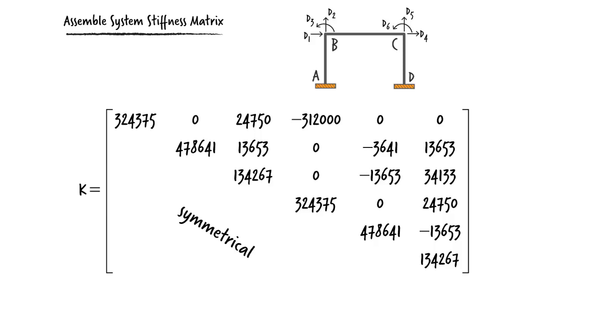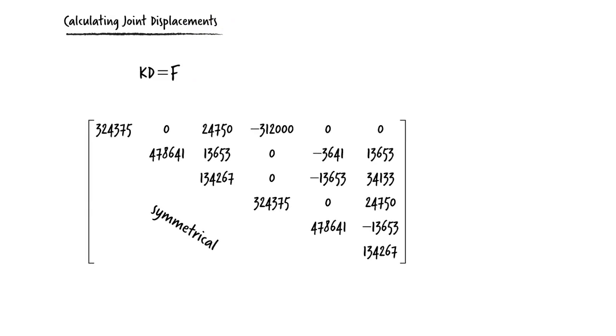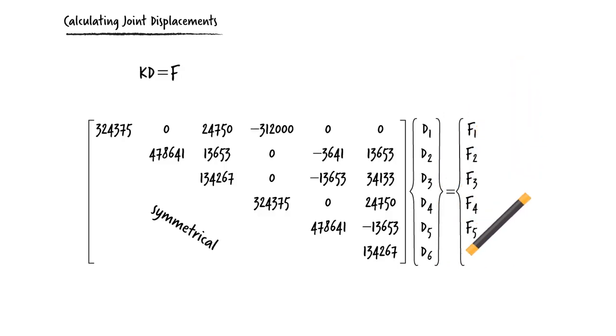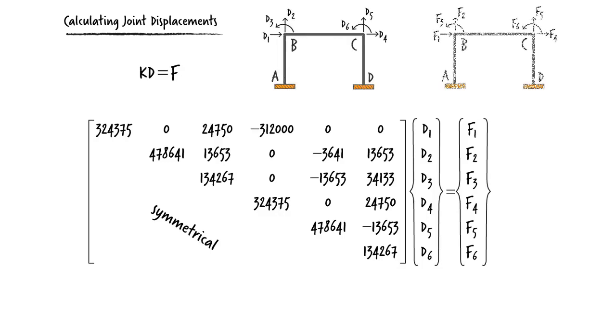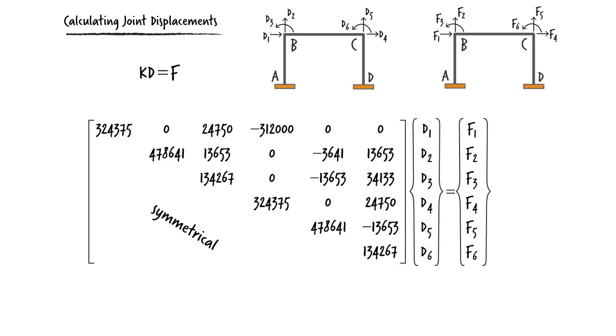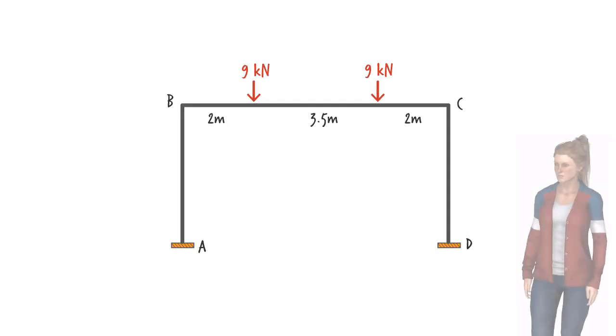The system of equations that we need to solve is K times D equals F. Where K is the system's stiffness matrix, D is the unknown displacement vector, and F is the vector of joint loads. Since in this frame the loads are placed on the beam, not at the joints, we need to convert the member loads to joint loads.